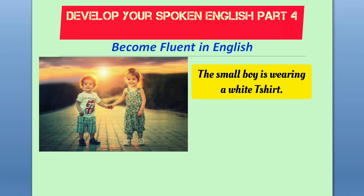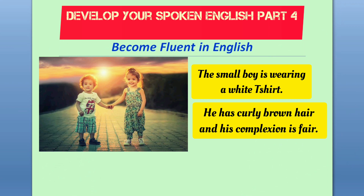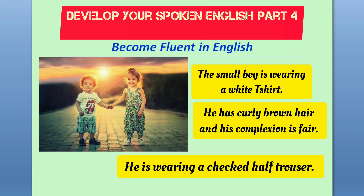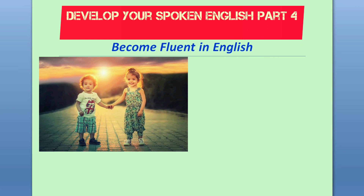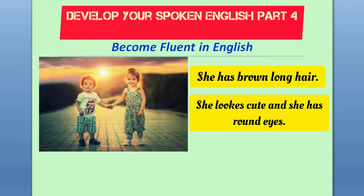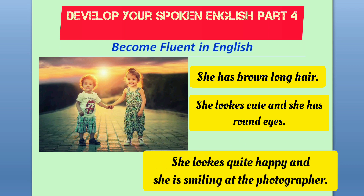You can describe each character in detail. The small boy is wearing a white t-shirt and has curly brown hair. His complexion is fair and he is wearing checked half trousers. The small girl has brown long hair and round eyes, and she looks quite cute. Both of them are wearing shoes.